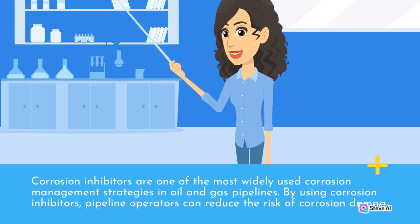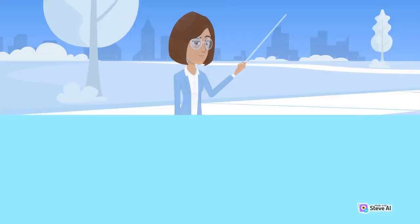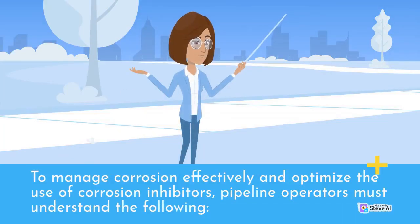In oil and gas pipelines, by using corrosion inhibitors, pipeline operators can reduce the risk of corrosion damage and extend the lifespan of their pipelines. To manage corrosion effectively and optimize the use of corrosion inhibitors, pipeline operators must understand the following.